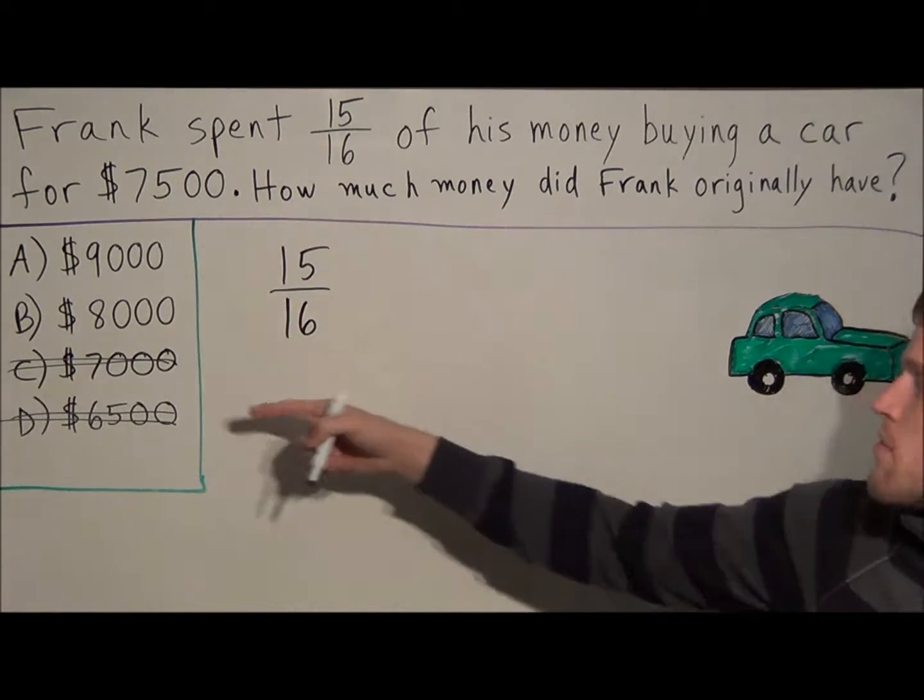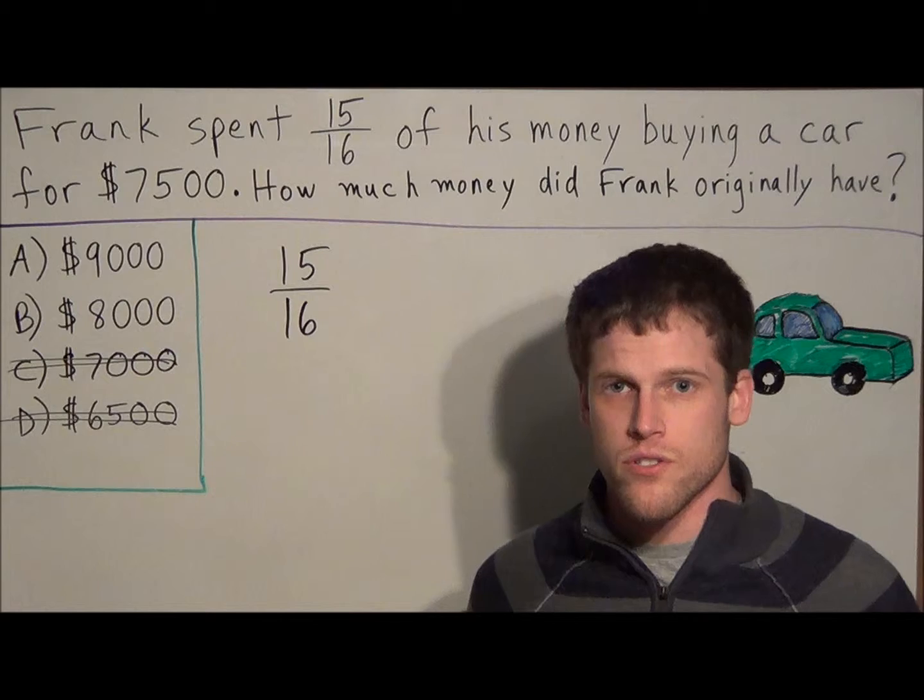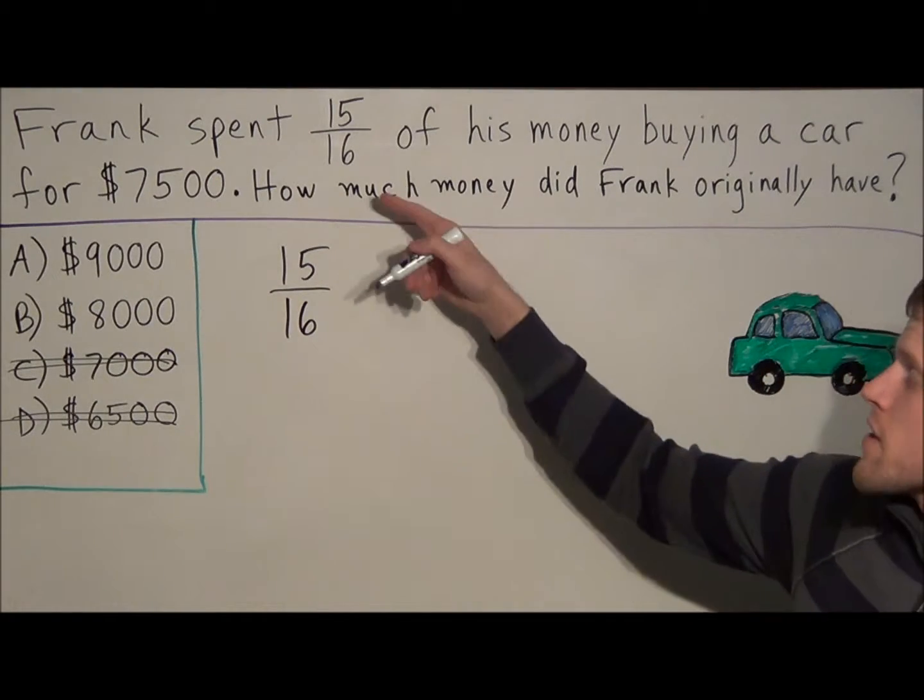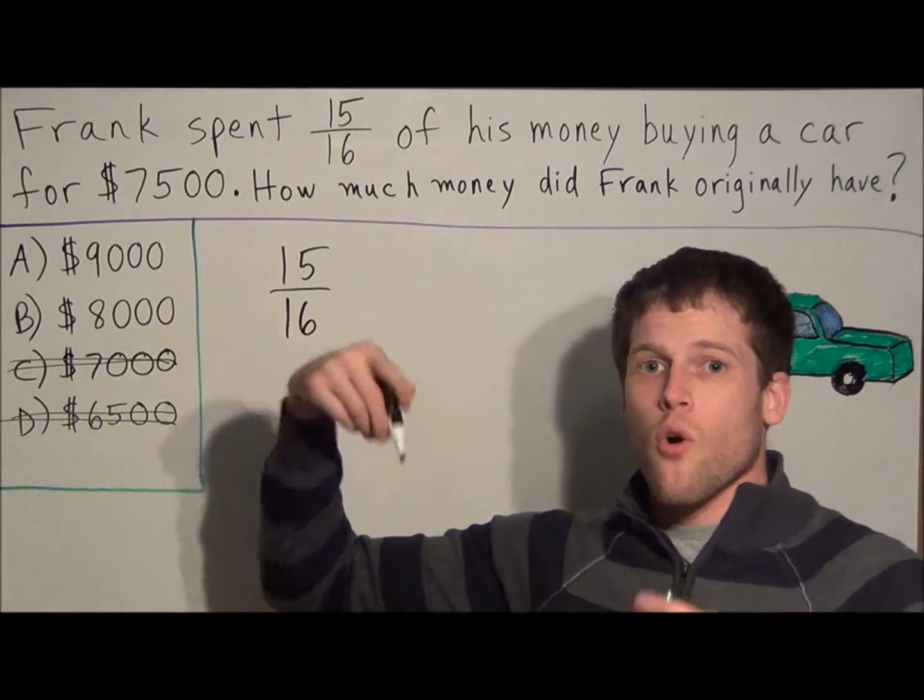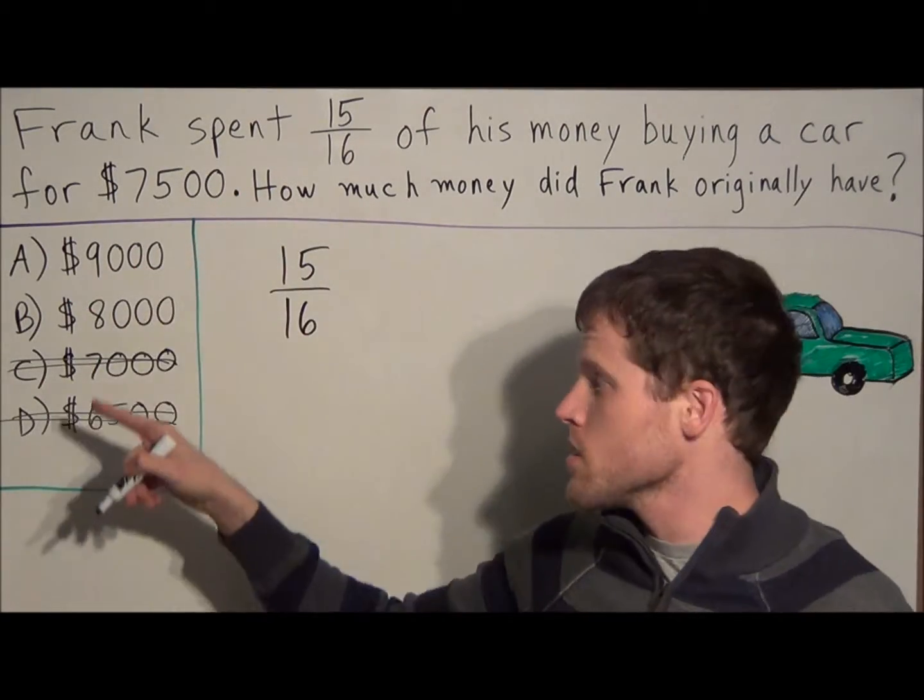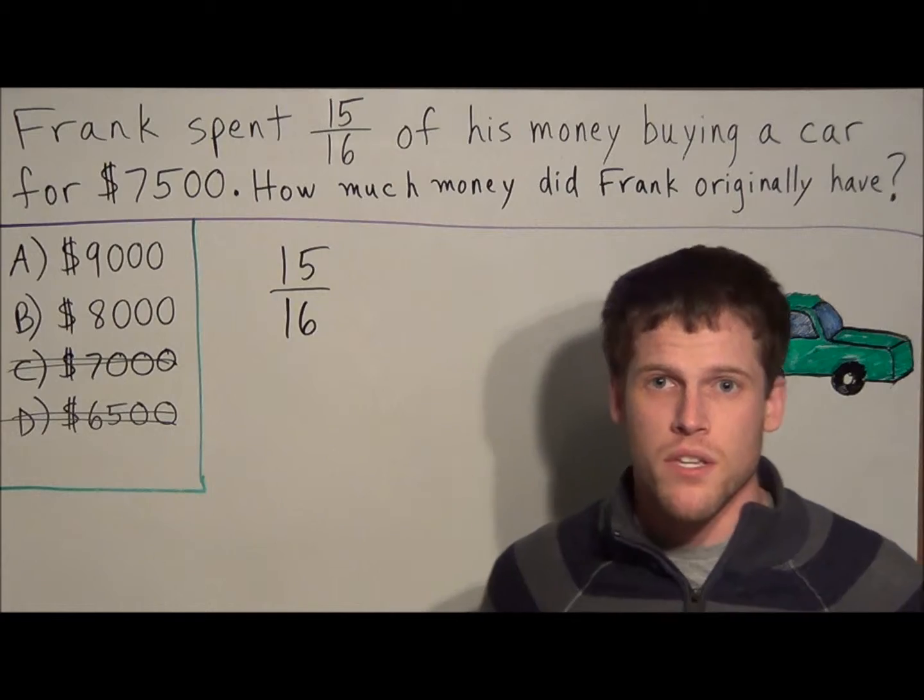because those amounts are less than $7,500. So once again, because Frank spent part of his money, and part of his money equals $7,500, then all of his money has to be more than this, narrowing it down to choices A and B.